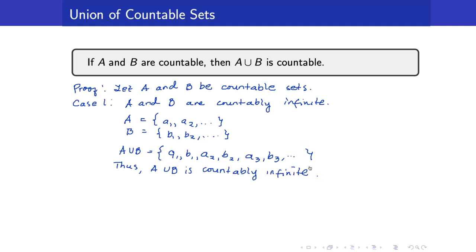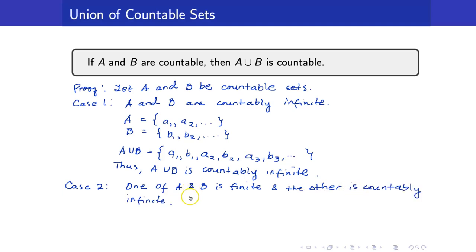For case 2, I will leave it as an exercise: what if one of A and B is finite and the other is countably infinite? For case 3, where A and B are both finite, we have already seen in lecture 44 that the union of two finite sets is again a finite set, so no need to prove that.